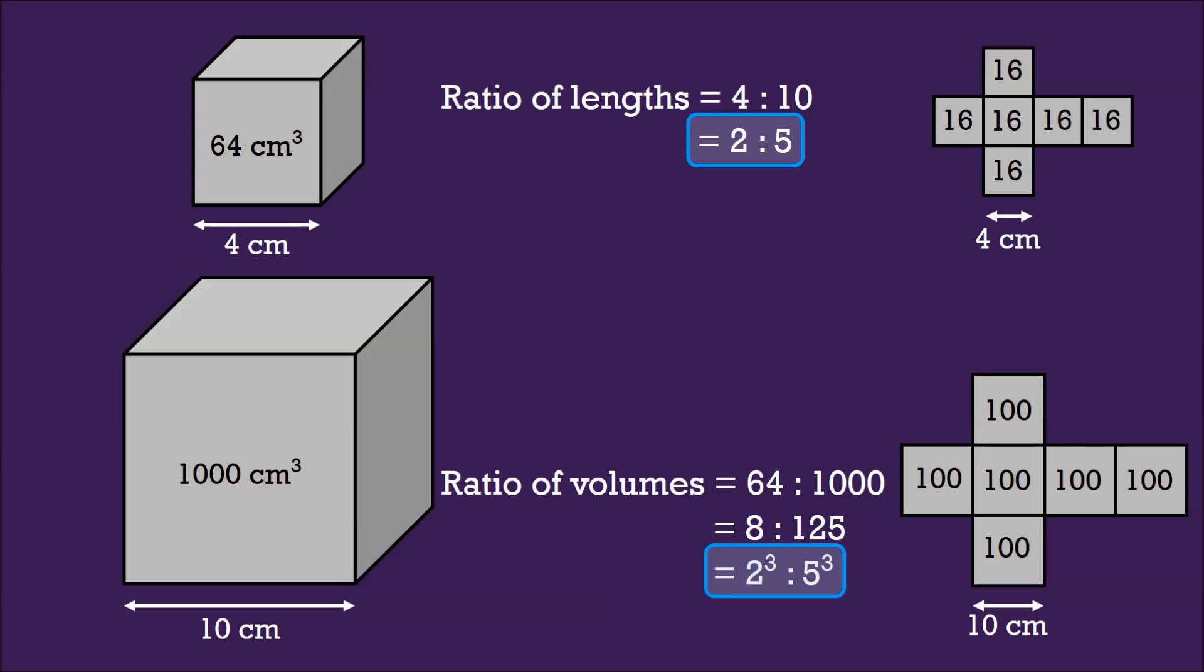So, the ratio of their surface area would be 16×6 is to 100×6. We can easily simplify this, cancel out the 6, then divide by 4, this gives us 4:25.